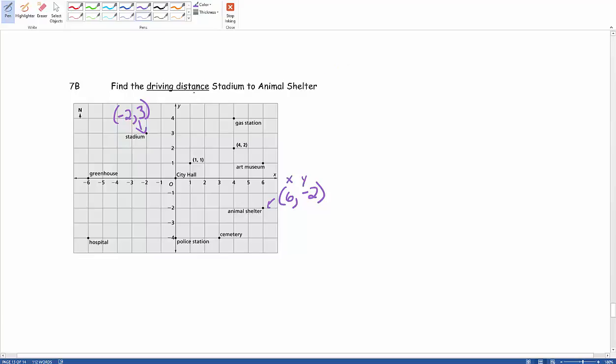Now when we're talking about the driving distance, how to get from the stadium to the animal shelter, we pretty much just have to count the number of blocks that we would have to go. So if we're starting off here...